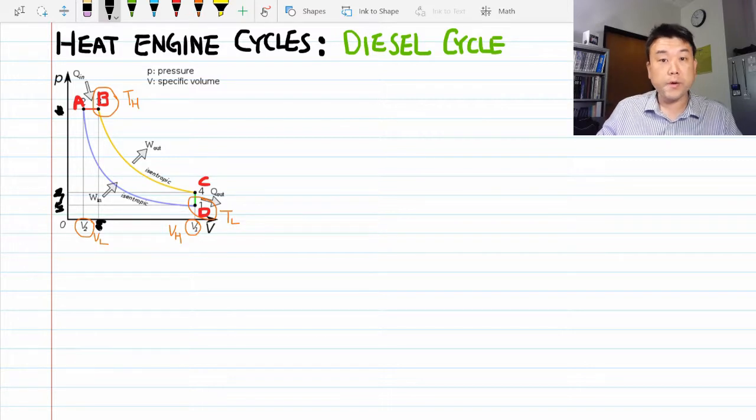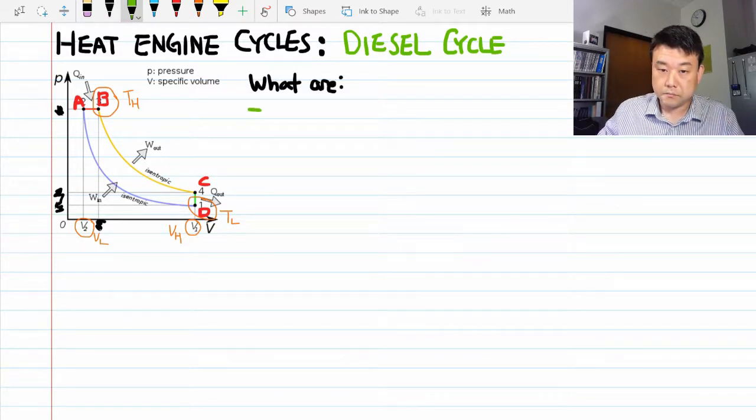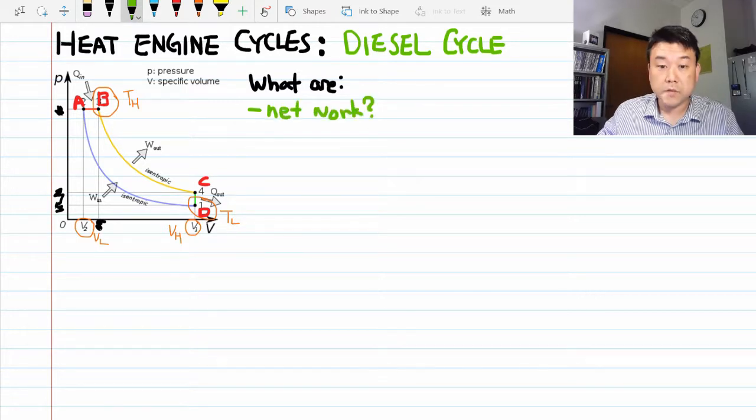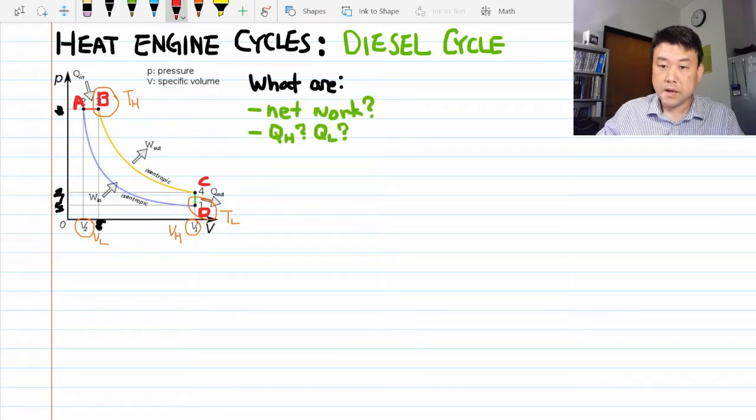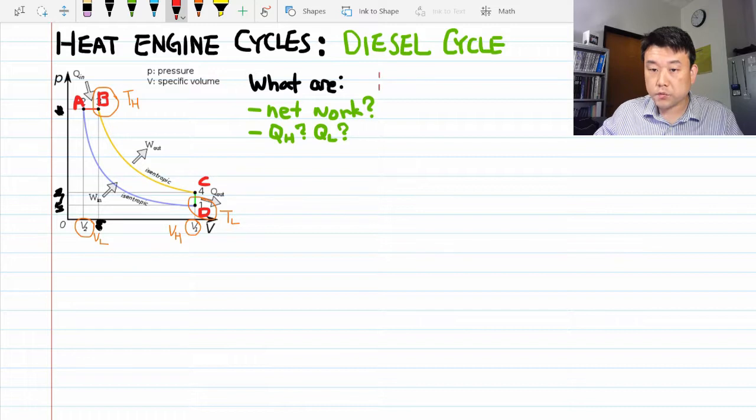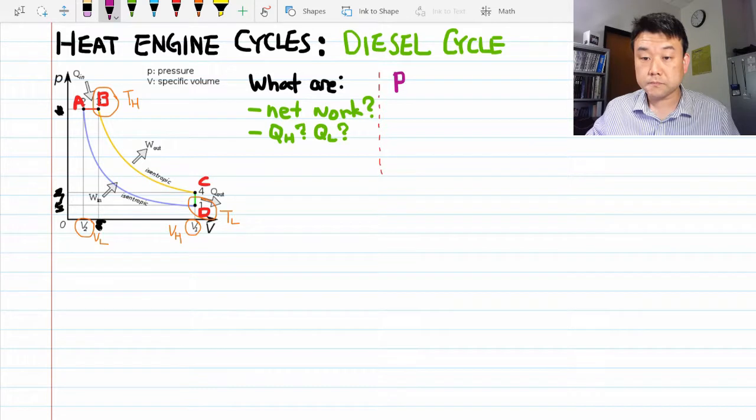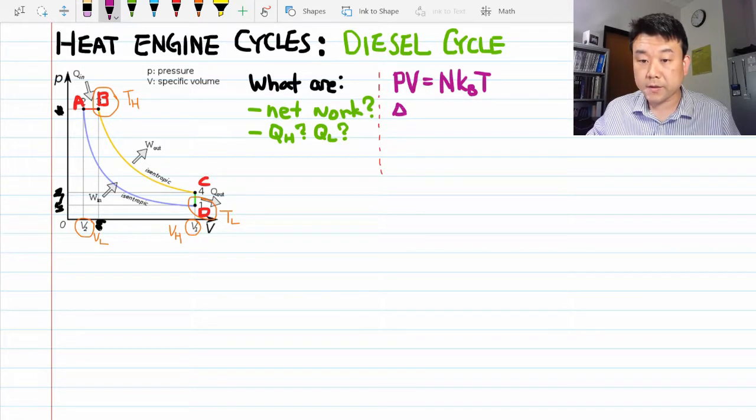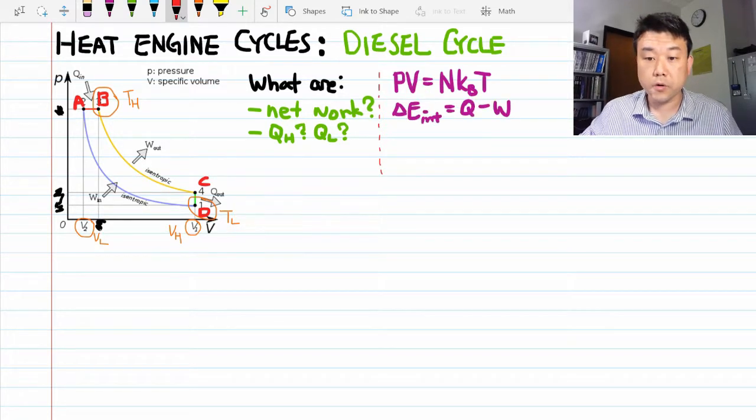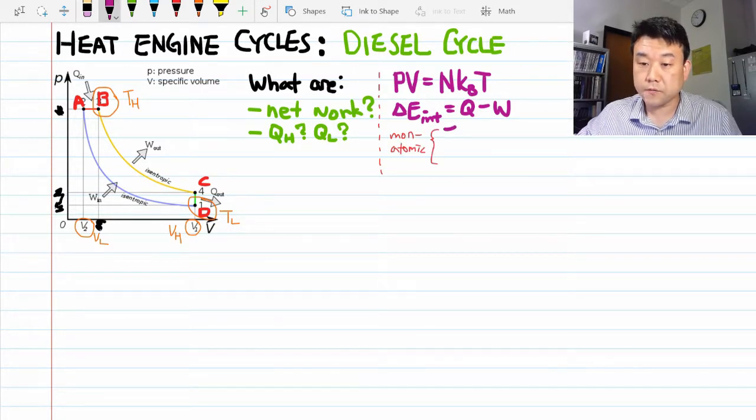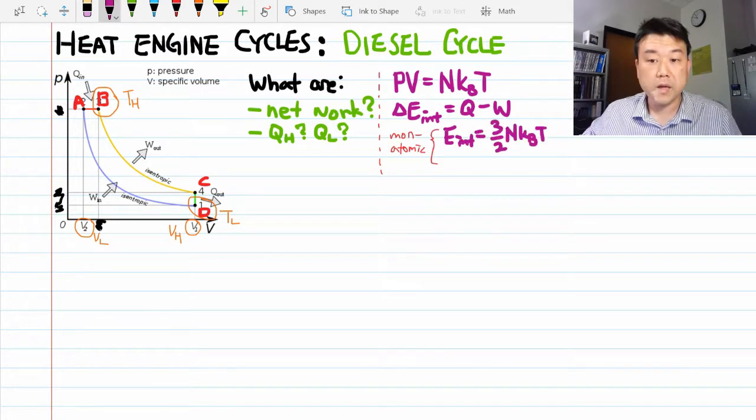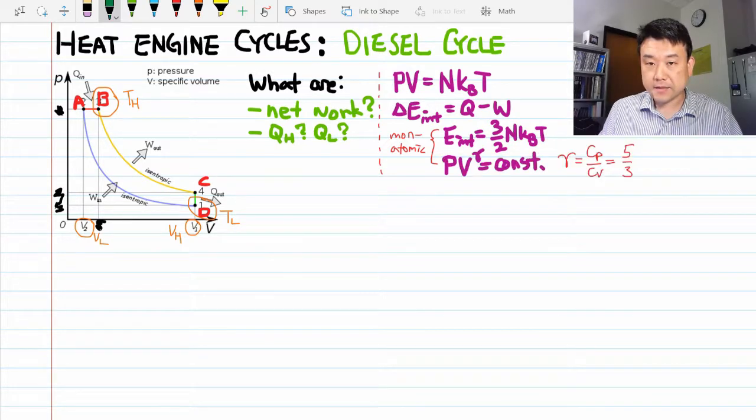So we are asking the same question as always. What are the network done and the heat transfers? And let me write down all the equations we have been using. Those haven't really changed. The ideal gas law. First law of thermodynamics. And for monatomic gases, the expression for the internal energy and the adiabatic relationship. Alright, let's get started.